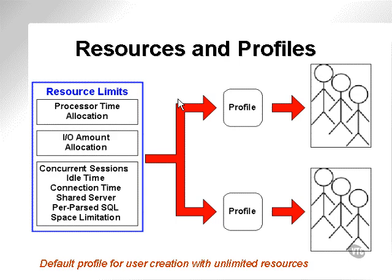Resources and profiles are a method of assigning percentages of hardware resources to different sets of users through profiles. Resource limits are assigned to different profiles, and those profiles are assigned to different groups of users. Resource limits include obvious limits such as processor or CPU time, input/output, and various other items. A percentage of resources would be allocated to a profile as a fixed set — for instance, one profile could get 10% of CPU time and another could get 90% of CPU time.